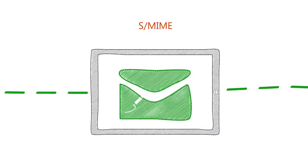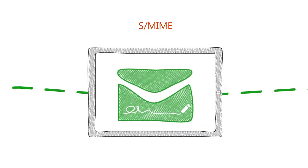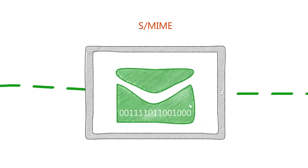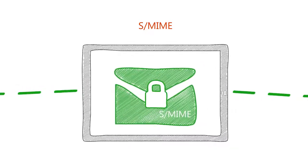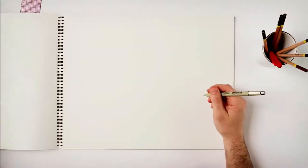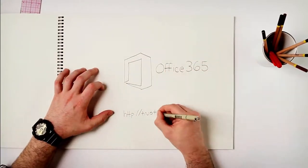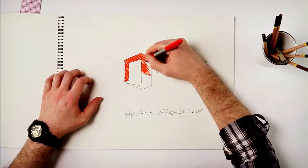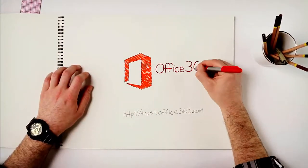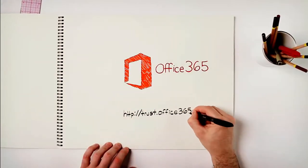You can either choose to digitally sign the messages or encrypt them using S/MIME. To learn more about encryption controls in Office 365, go to trust.office365.com.